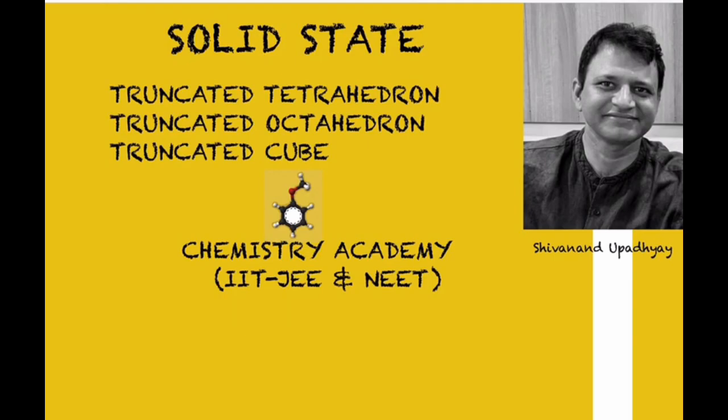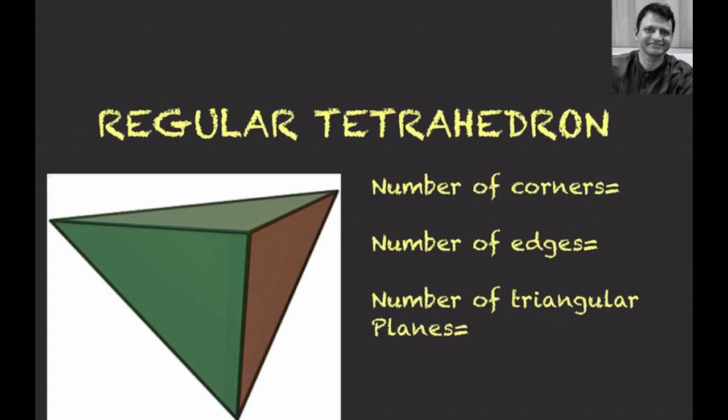I'd like to thank Janardhan sir for introducing us on his YouTube channel Physics Surgery. Today we are going to discuss truncated geometry. This concept was asked in JEE Advanced 2011, where they asked to calculate the number of hexagonal faces in a truncated octahedron. Truncated octahedron is the symmetry of zeolites, which are three-dimensional silicates. Many types of problems can be framed on this concept, so let us discuss them one by one, starting with the regular tetrahedron.